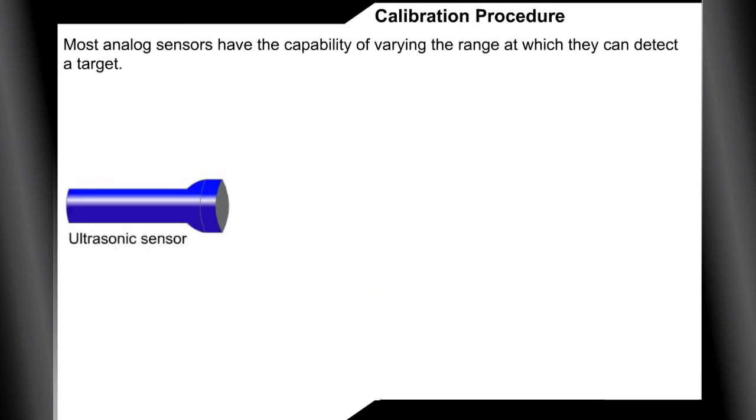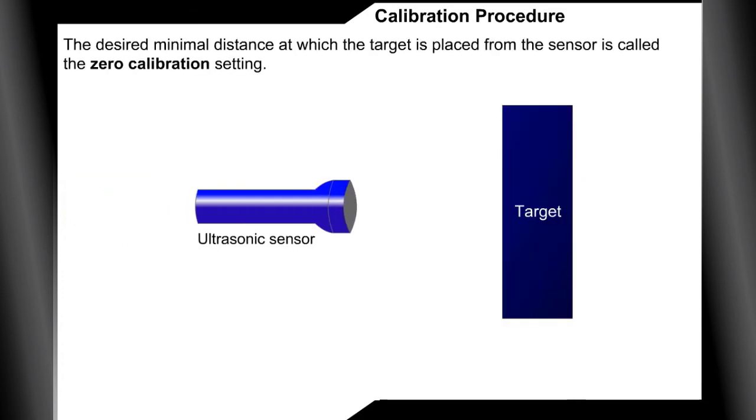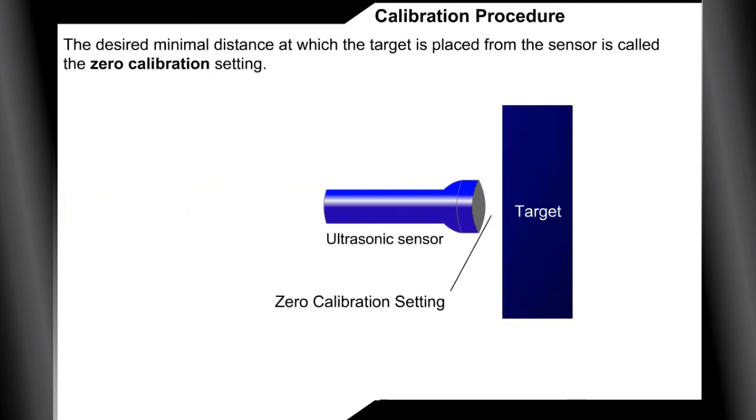Calibration procedure. Most analog sensors have the capability of varying the range at which they can detect a target. This function is performed by a procedure called calibration. The desired minimal distance at which the target is placed from the sensor is called the zero calibration setting.